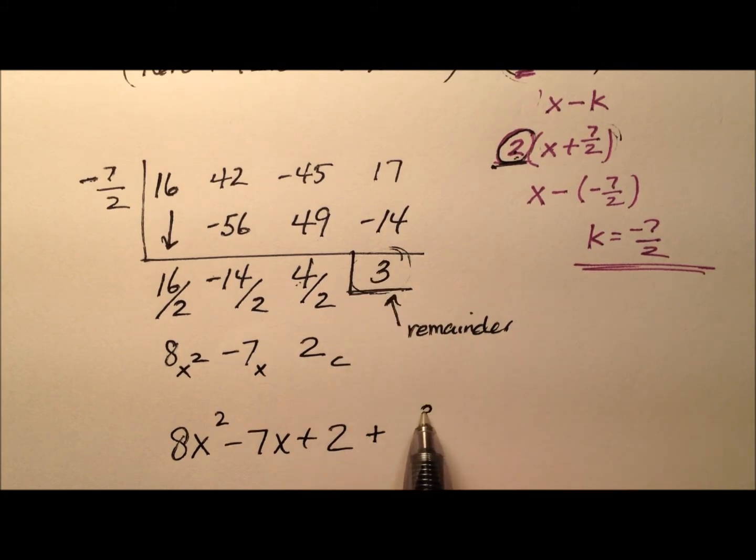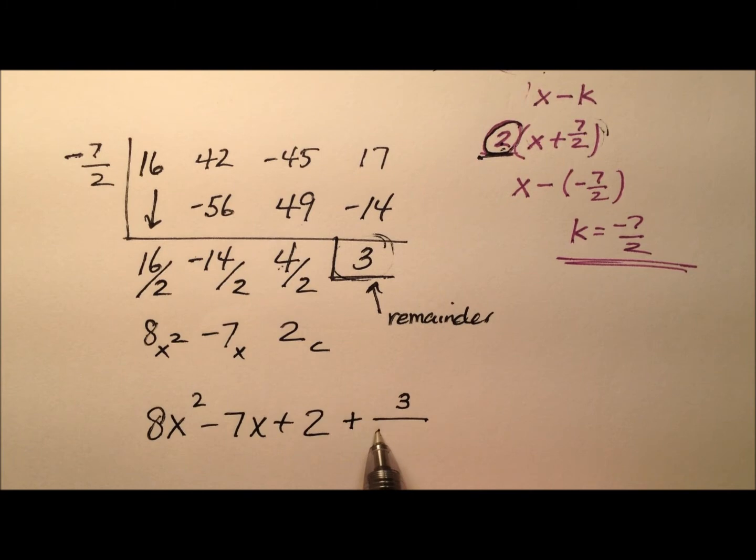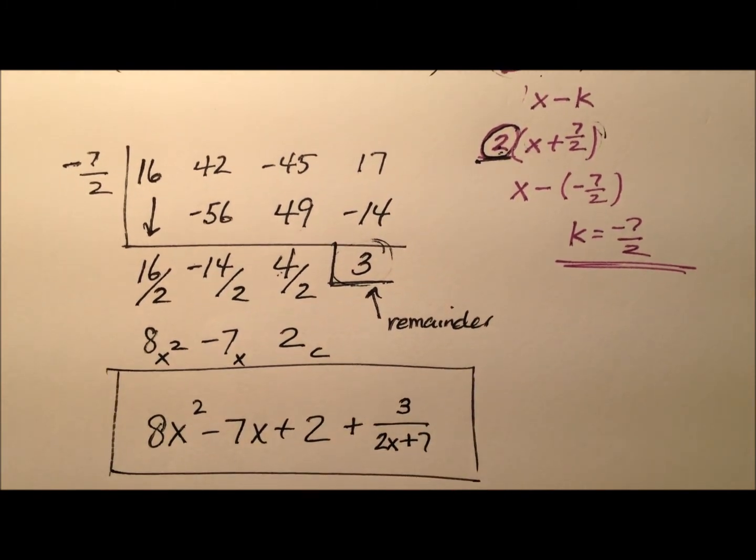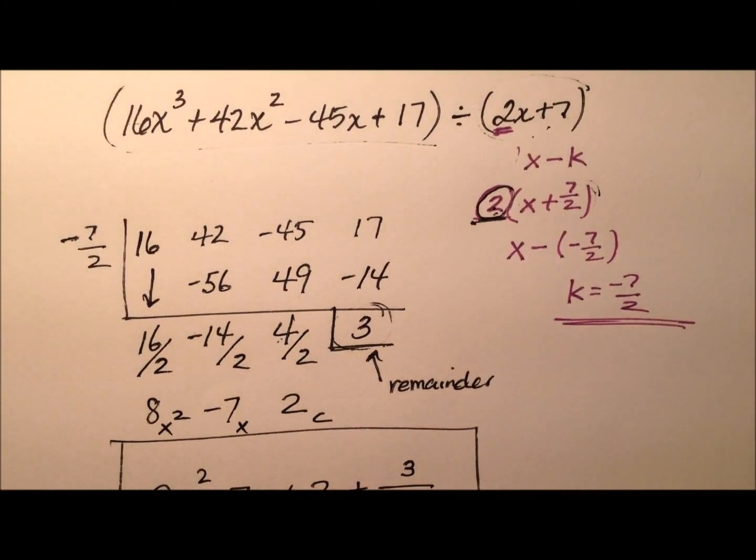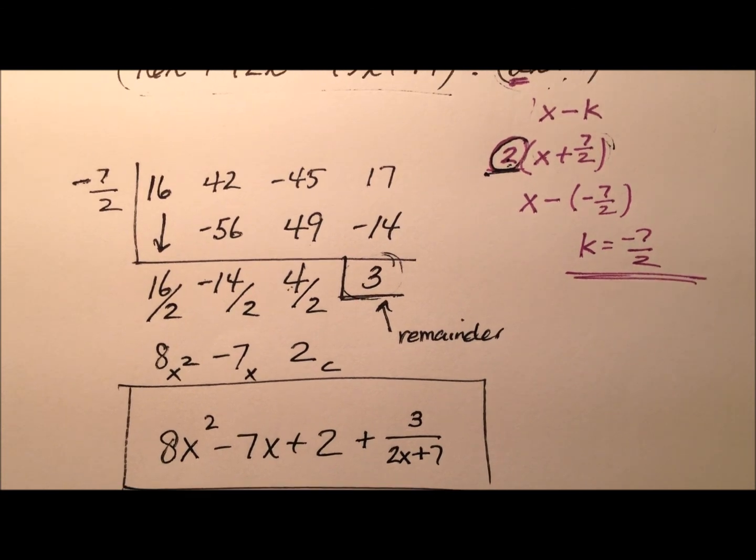But I can't forget my remainder. So plus, since it's positive, 3 over my divisor of 2x plus 7. So here then is the quotient when I divide this polynomial by this linear binomial, 2x plus 7, and use synthetic division to do so.